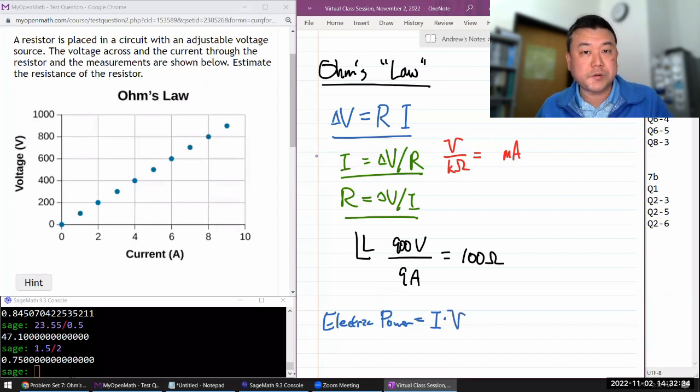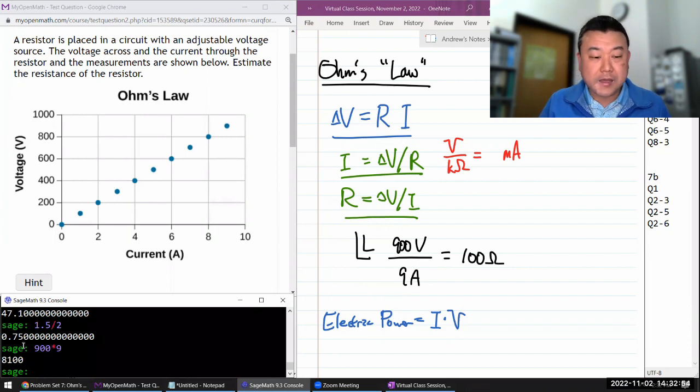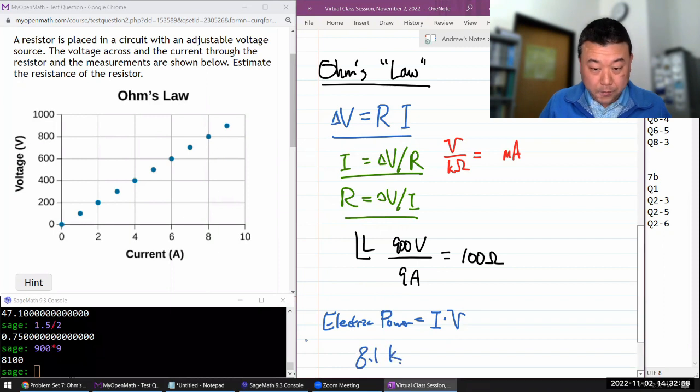So here, I have both the voltage, 900 volts, and the current, 9 ampere. Let me just do that product. 900 times 9. I have 8,100 or 8.1 kilowatt.